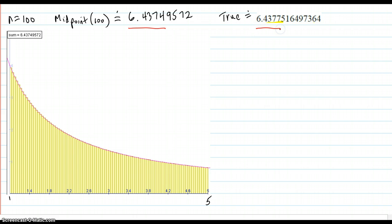The true is 6.437516497364, so it's a little bit off. But it's certainly converging faster than the left and right methods did, and comparable to the trapezoid.